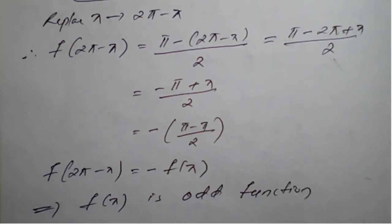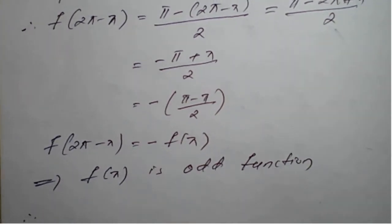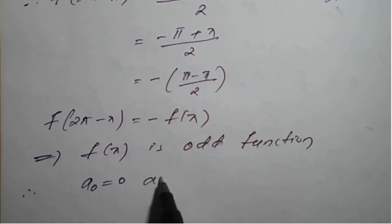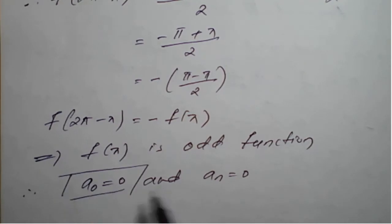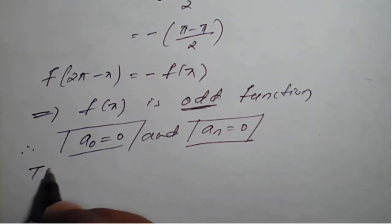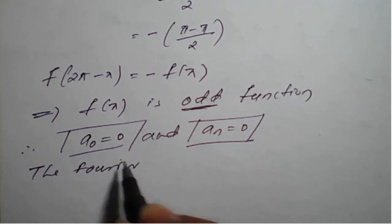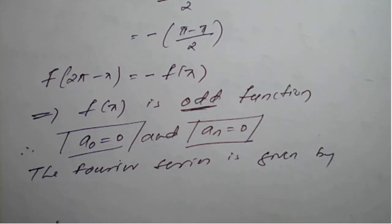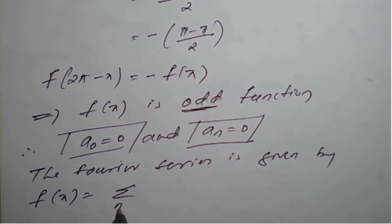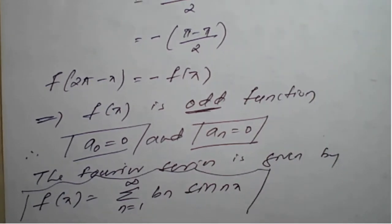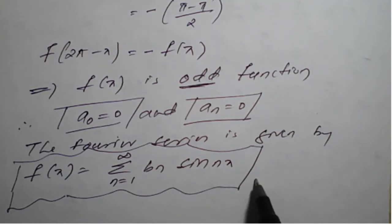f(x) is an odd function. Therefore, in the Fourier series, if the function is odd, then a₀ = 0 and aₙ = 0. The Fourier series of period 2π is given by f(x) = Σ(n=1 to ∞) bₙ sin(nx). We need to calculate only bₙ since the function is odd. This is equation number 1.